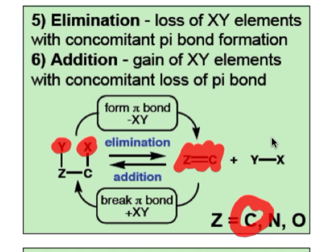Elimination is an important method for forming pi bonds, and it's also a commonly observed alternative to substitution chemistry. In other words, we may mix seemingly appropriate substrates together expecting substitution products, but end up with elimination products instead.